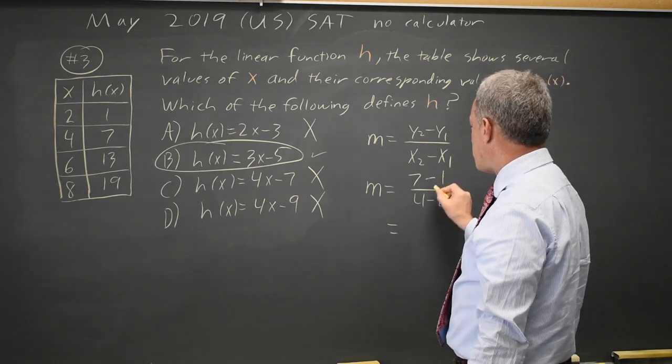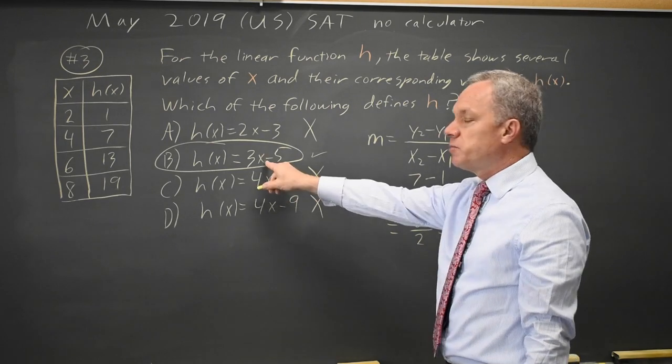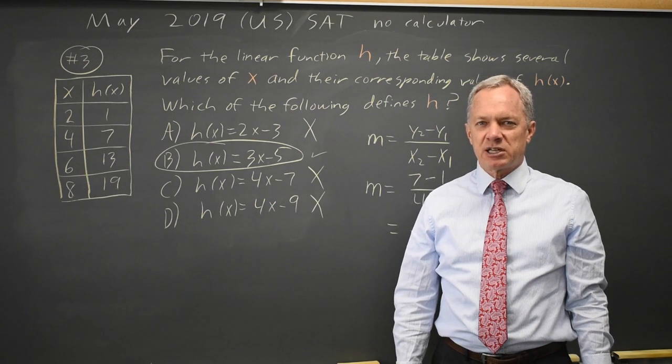So my slope is 7 minus 1 is 6 over 4 minus 2, which is 2. The slope is 3. Since choice B is the only choice with slope 3, that must be the correct answer.